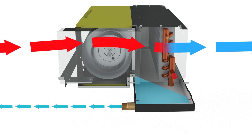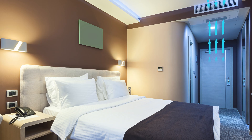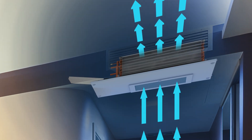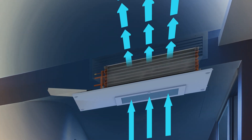Horizontal fan coils are typically installed above the ceiling, making it ideal for buildings where ceiling space is limited but individual temperature control is still needed. Their installation location also allows the equipment to operate quietly.